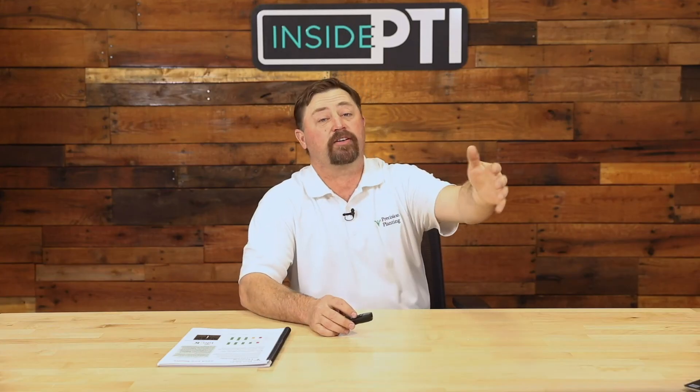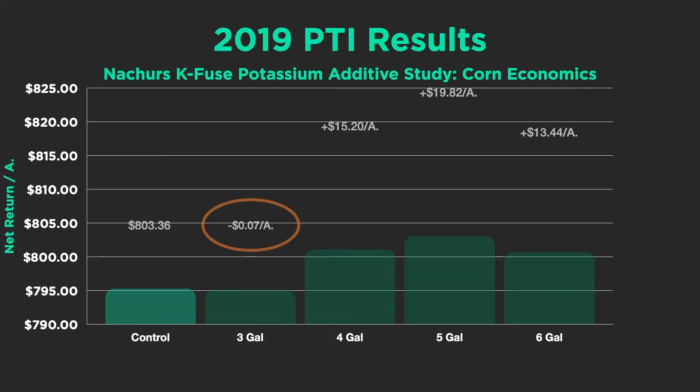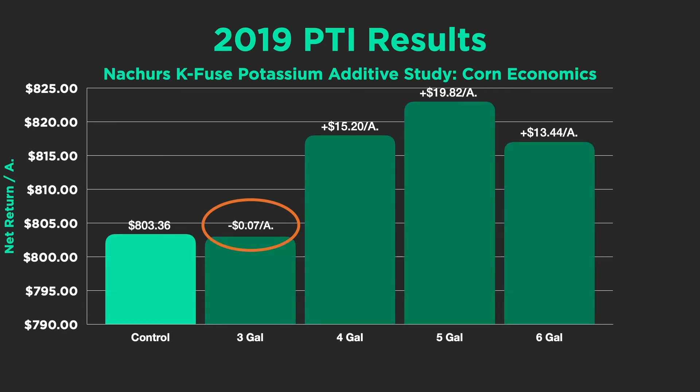When we factor in the cost of these rates and look at net return, at three gallons per acre we didn't see enough yield response to pay for the product. But at four, five, and six gallons per acre, we're seeing almost $20 of net return per acre — after the cost of the K-Fuse product. So some pretty nice response there.